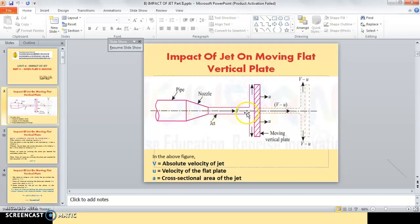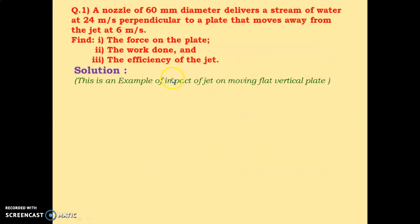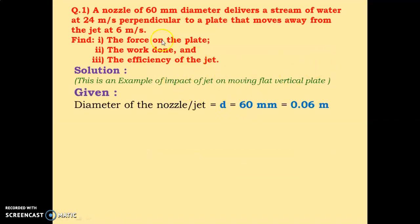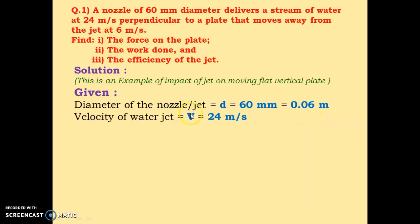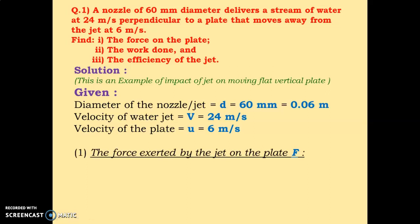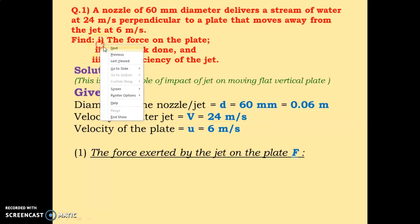The jet comes out of the nozzle with diameter D and velocity V, and the plate is moving with velocity U. Given: diameter of jet is 60 millimeter or 0.06 meters, velocity of water jet is 24 meter per second (V), and velocity of the plate (u) is 6 meter per second.